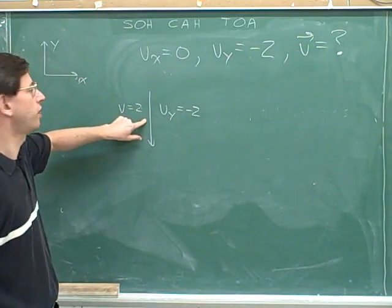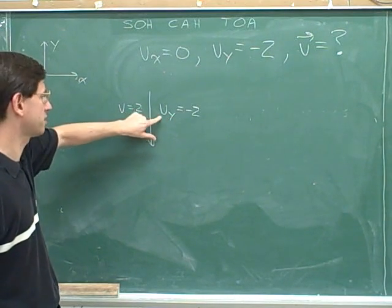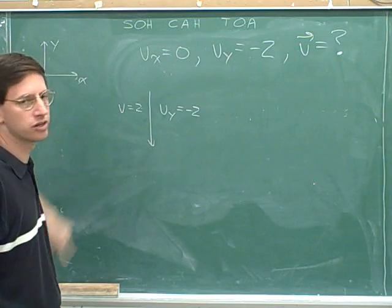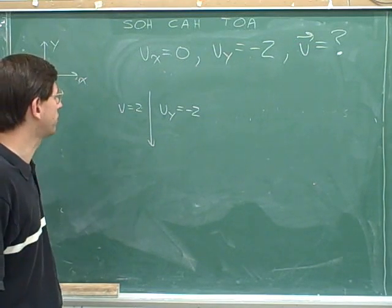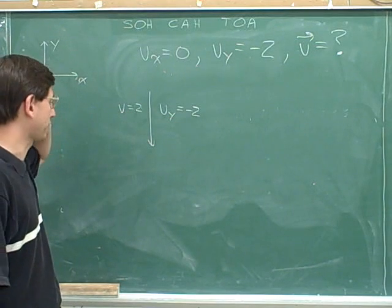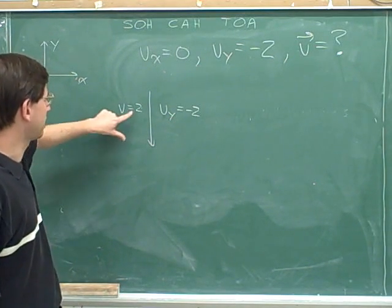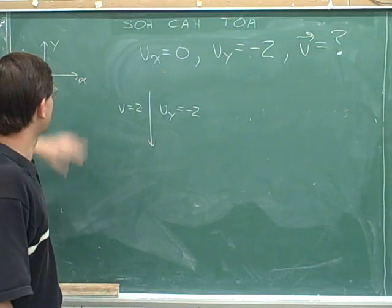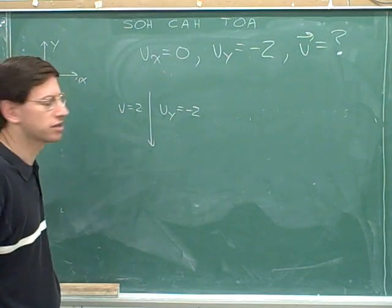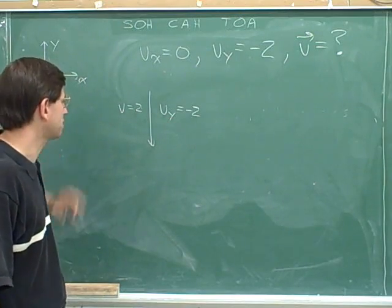This arrow also represents the overall vector. The y component is the only component there is, so the same arrow indicates the y component and the overall vector. So the magnitude of the overall vector is 2. Remember that generally we're not going to indicate a sign on an overall vector. We just want to focus here on the magnitude of the overall vector, which is 2.